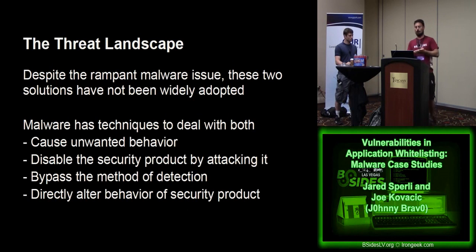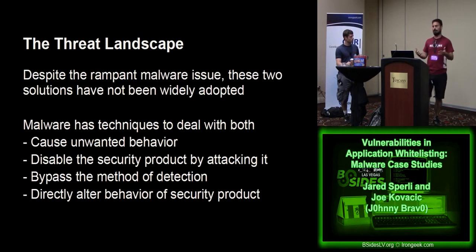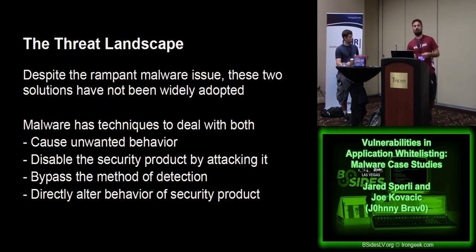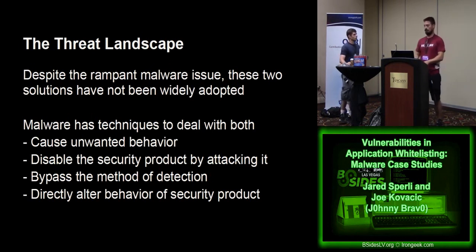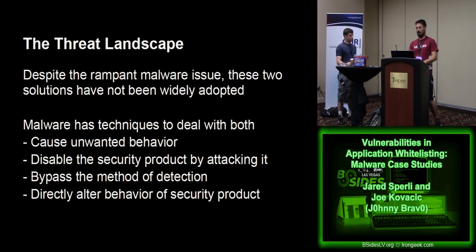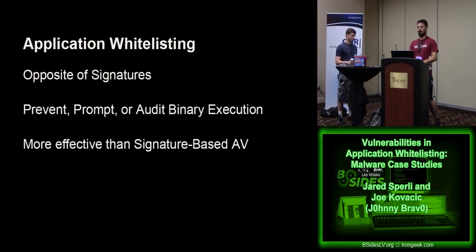What we broke it down to is four types of malware techniques and the impact they can have on new security solutions. Malware can quite easily: one, cause unwanted behavior - making the machine do things it wasn't intended to do; two, disable the security product you put on the machine by attacking it outright; three, bypass the means of detection; and four, directly alter the security product and make it its own. With that, we come up to the topic of application whitelisting, and I'll turn it over to Joe for the demos.